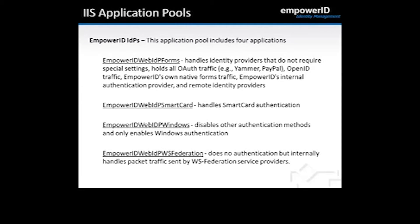Our final application pool is Empower ID IDPs — Identity Providers. It supports the Web IDP Forms application, which handles identity providers not requiring special settings, including OAuth, OpenID, native forms traffic, Empower ID's internal authentication provider, and remote identity providers. There is also the Web IDP SmartCard application for SmartCard authentication, the Web IDP Windows application which disables other authentication methods and only enables Windows authentication, and the Web IDP WS-Federation web application which handles packet traffic sent by WS-Federation service providers.